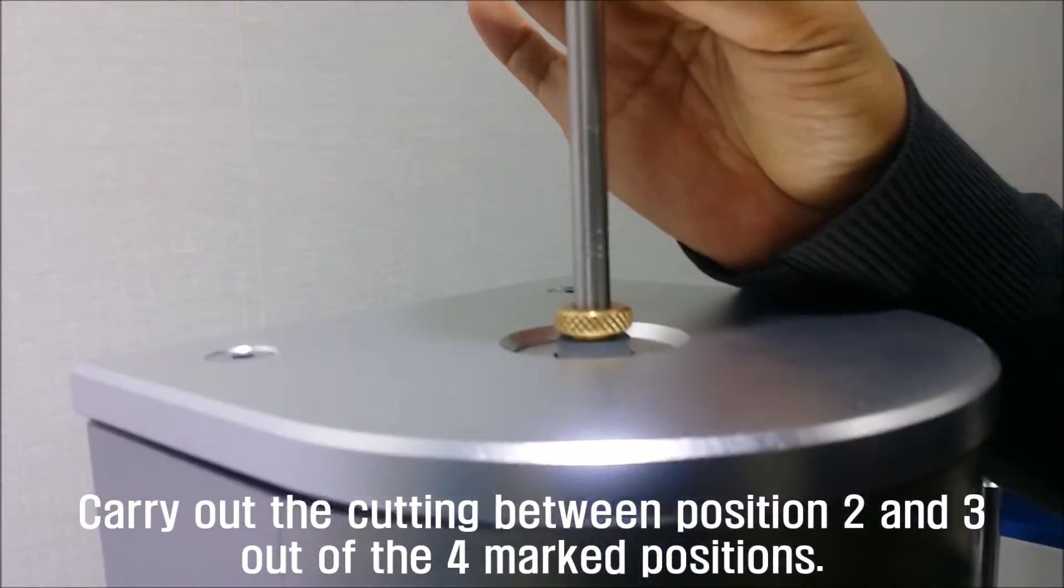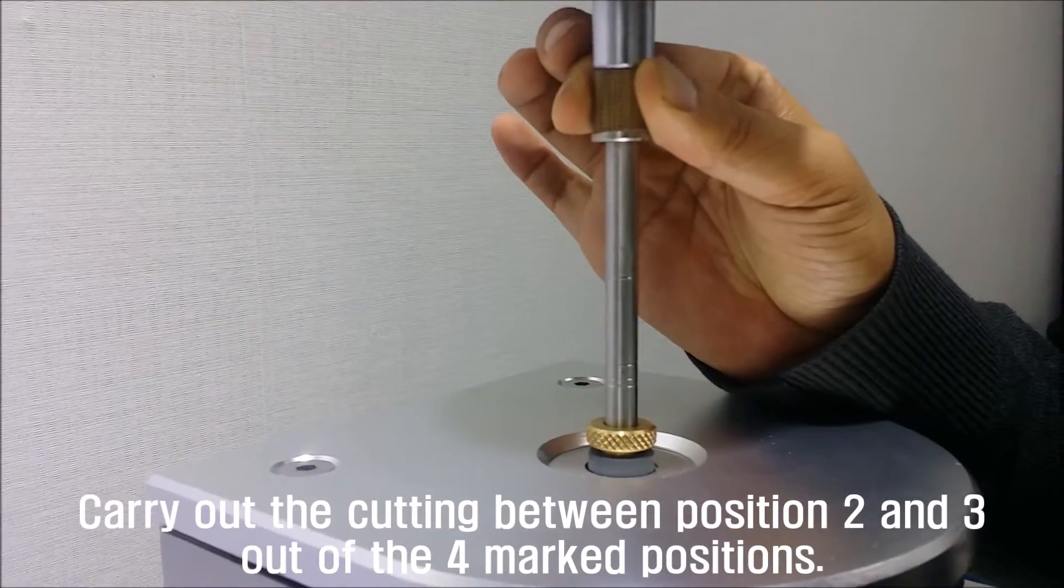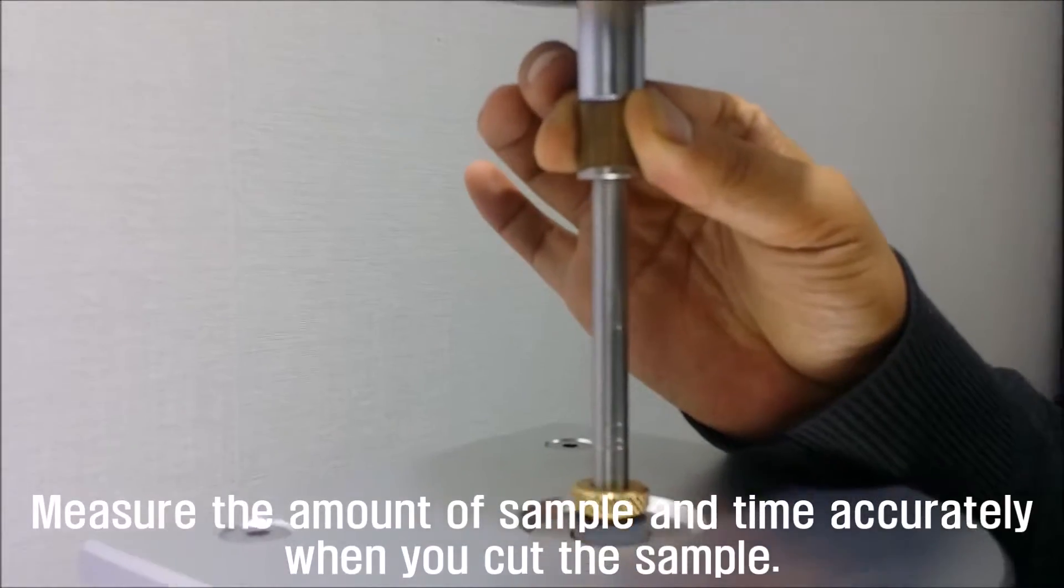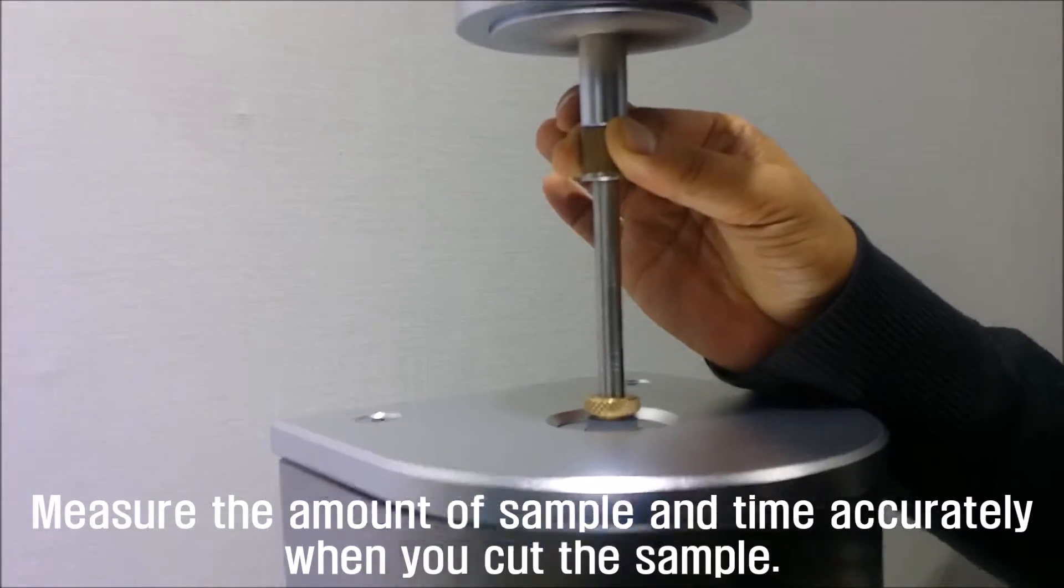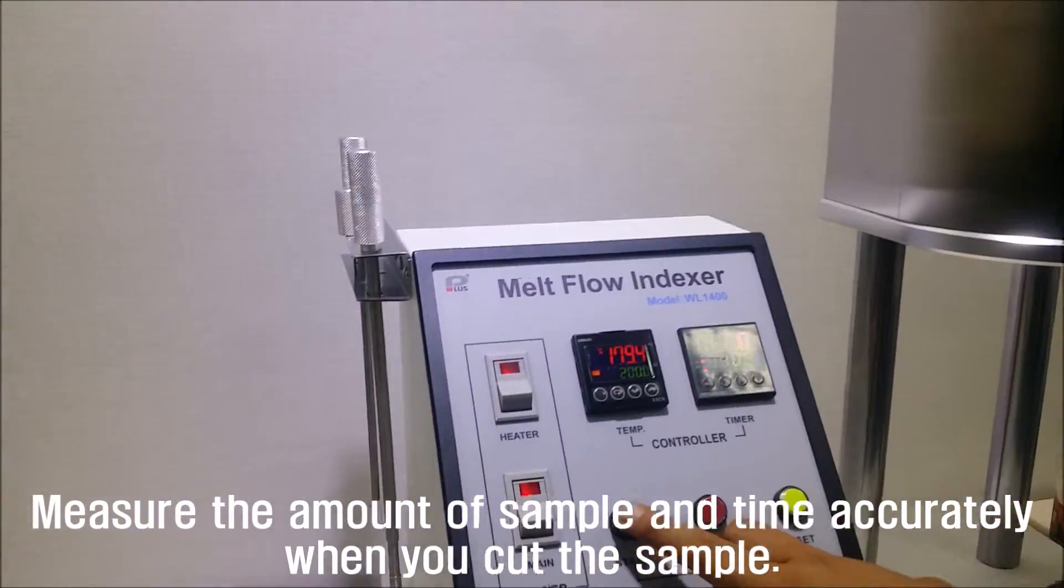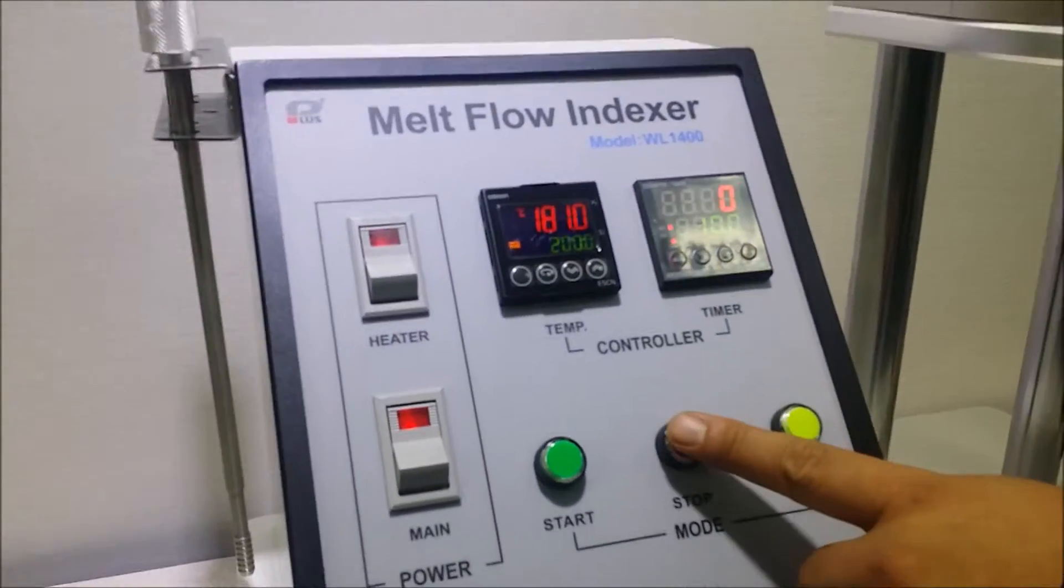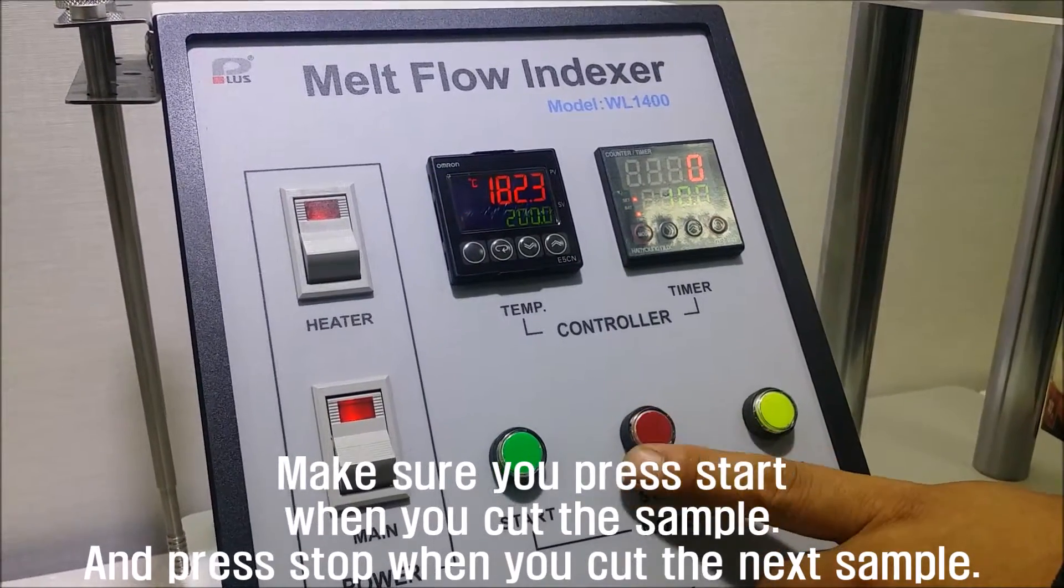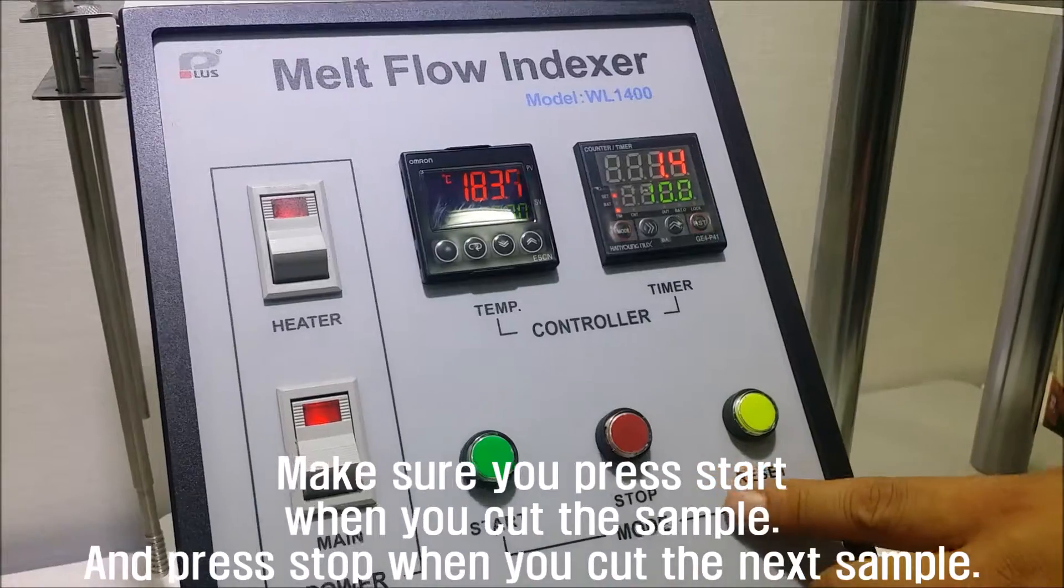Carry out the cutting between position 2 and 3 out of the 4 marked positions. Measure the amount of the sample and time accurately when you cut the sample. Make sure you press start when you cut the sample and press stop when you cut the next sample.